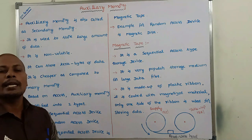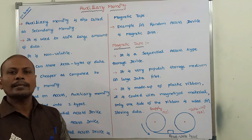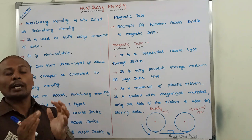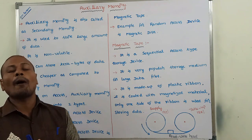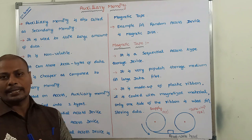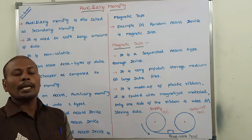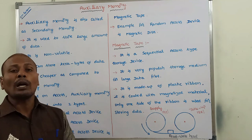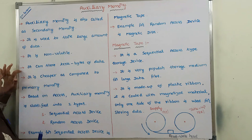Auxiliary memory is non-volatile. That means, once the power is switched off, whatever the data that is stored in the auxiliary memory cannot be erased. Hence, we can say that auxiliary memory can also be called as non-volatile memory.